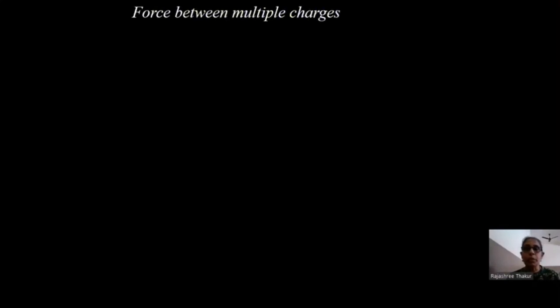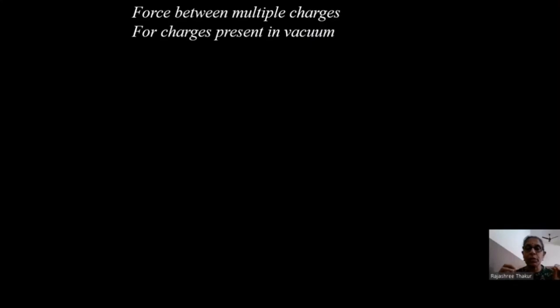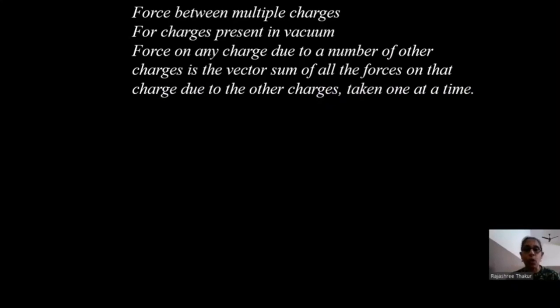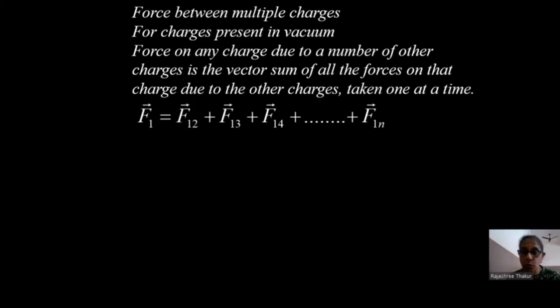Let us now find the force between multiple charges. If there are more than two charges in space, how do we calculate the force on one charge due to all other charges? We keep these charges in vacuum; behavior in a medium will be covered in the next chapter. The force on any charge due to a number of other charges is the vector sum of all forces on that charge due to other charges, taken one at a time. So force on Q1 due to Q2, force on Q1 due to Q3, force on Q1 due to Q4 — I have to add all these forces.